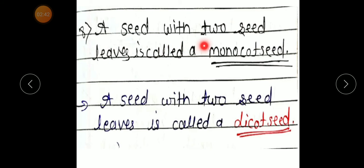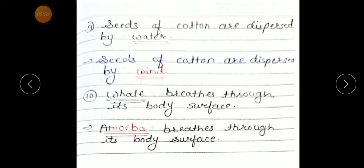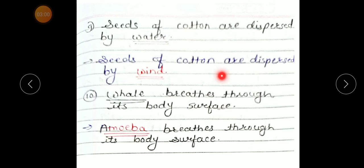Number 8: 'A seed with two seed leaves is called a monocot seed.' Correct statement: A seed with two seed leaves is called a dicot seed. Number 9: 'Seeds of cotton are dispersed by water.' Correct statement: Seeds of cotton are dispersed by wind.